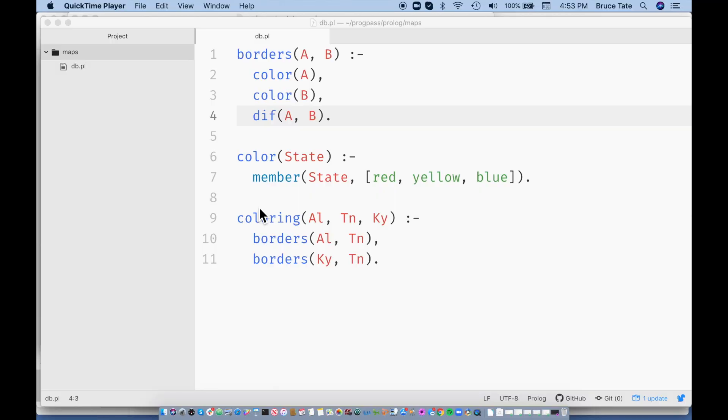This is the first problem that Joe and I worked together. This is the map coloring problem. You can immediately see this idea of writing a program by describing the solution in this map coloring problem.